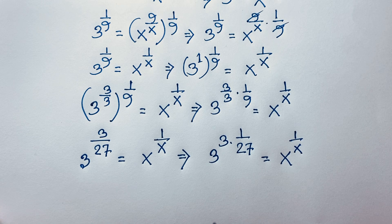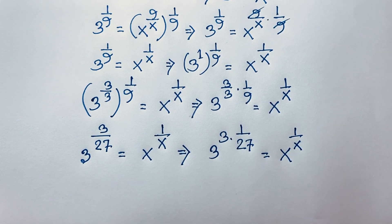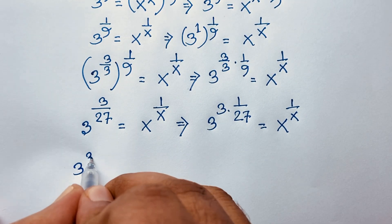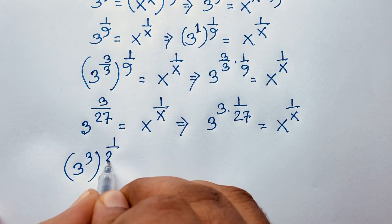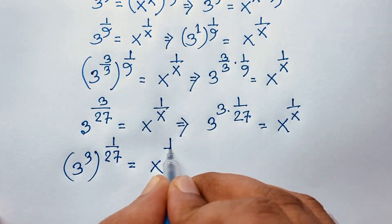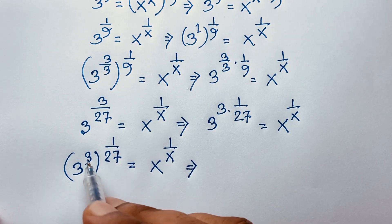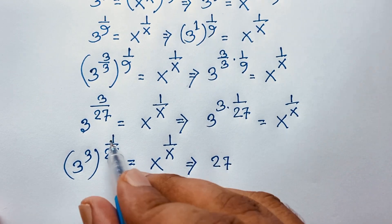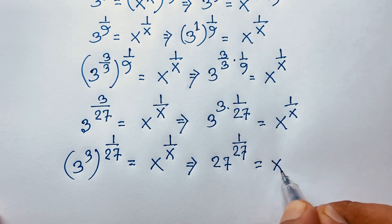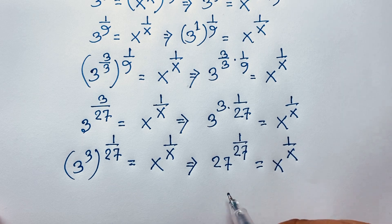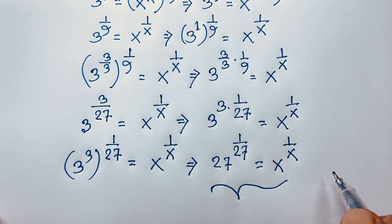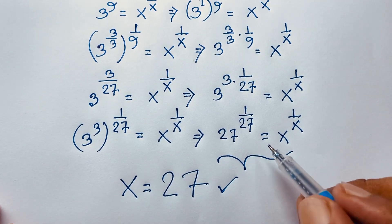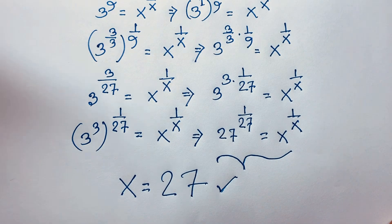Now, 3 times 1/27 equals 3/27. Applying the exponential formula, I write this as (3^3)^(1/27) equals x^(1/x). Since 3 to the power 3 equals 27, we get 27^(1/27) equals x^(1/x). Comparing both sides, x is equal to 27.